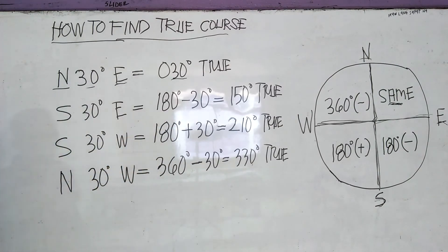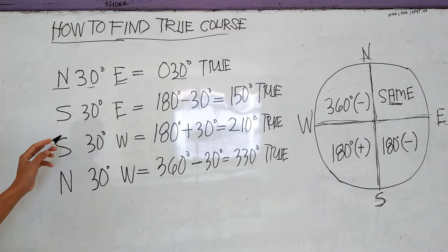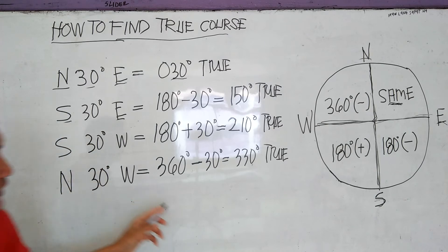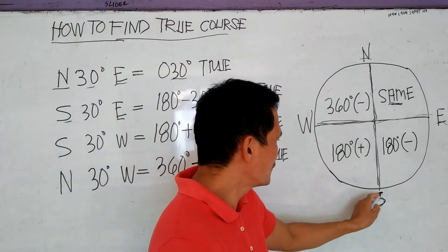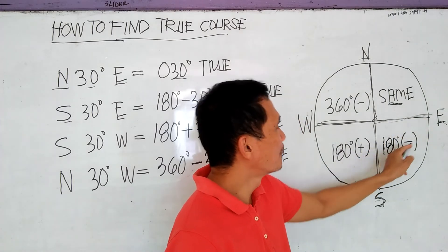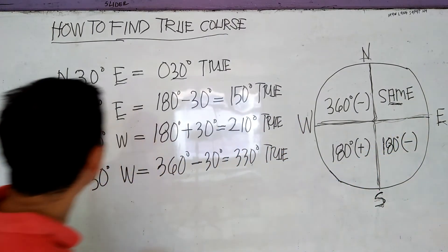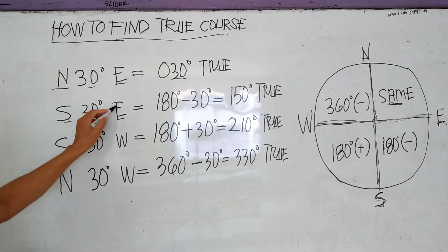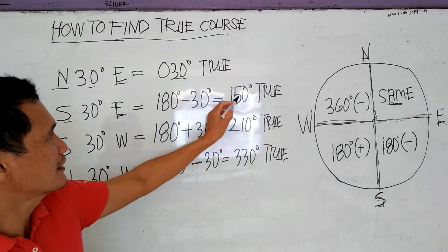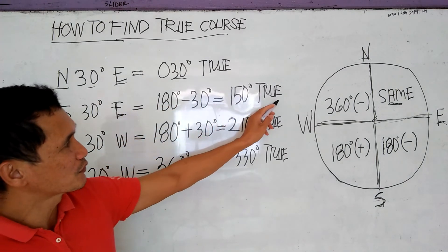Now, let's proceed to another example. If the course angle is South-East, the formula is 180 minus the course angle. So, South-East 30 degrees: 180 minus 30 gives a true bearing of 150 degrees true.